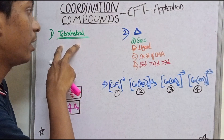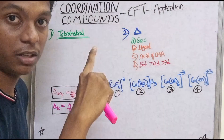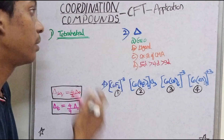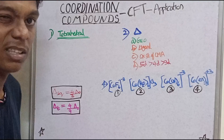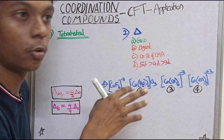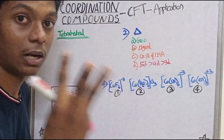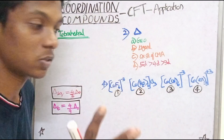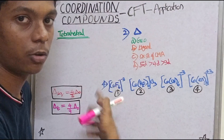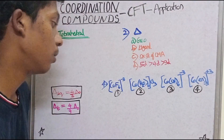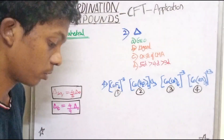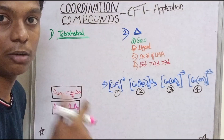In the first and second parts we covered octahedral splitting. Now we are going to talk about tetrahedral splitting — it is very easy and simple. We will discuss splitting energy and color. In the second part we will do a question on color. Now let's look at the octahedral splitting and then move to tetrahedral.